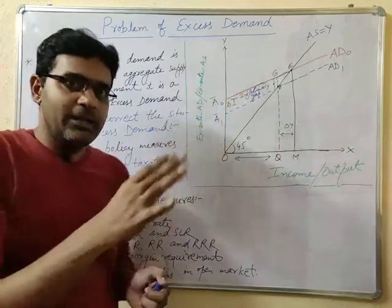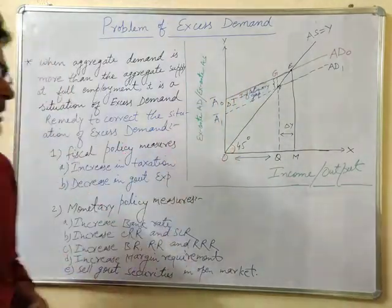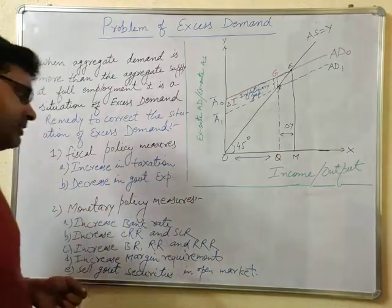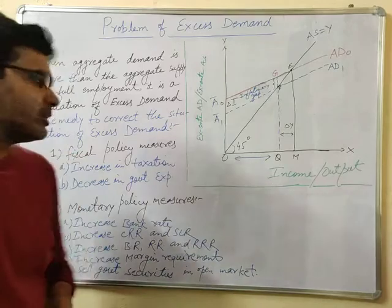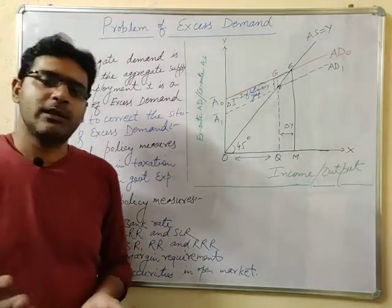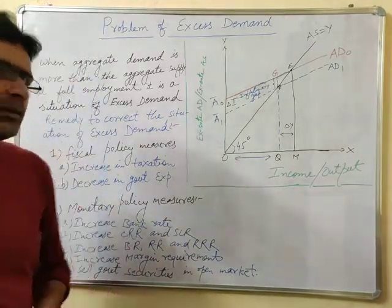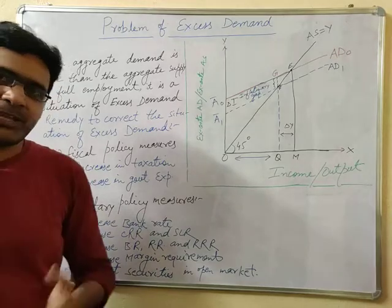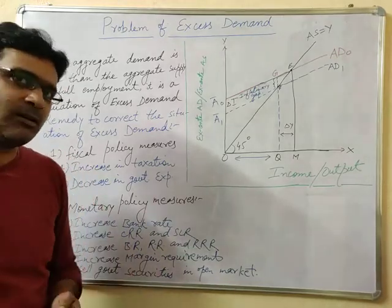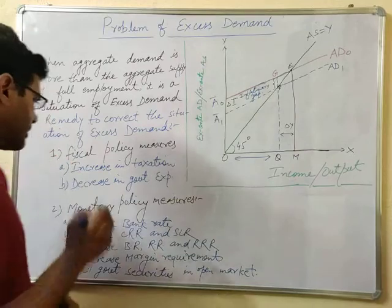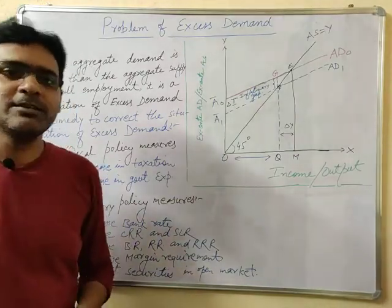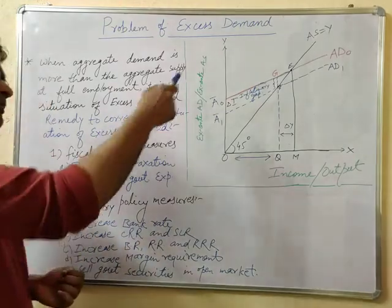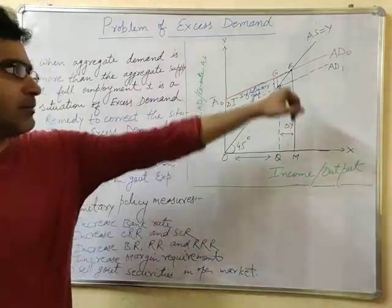In reality, the government takes two measures: fiscal policy measures and monetary policy measures. As far as fiscal policy is concerned — the reverse of deficient demand — the government will increase taxation, so people will have less purchasing power and aggregate demand will go down. Similarly, the government will decrease its own expenditure, reducing personal disposable income and decreasing aggregate demand by the GF amount.